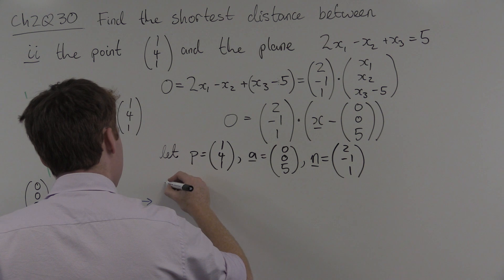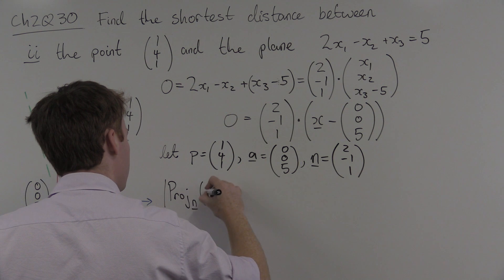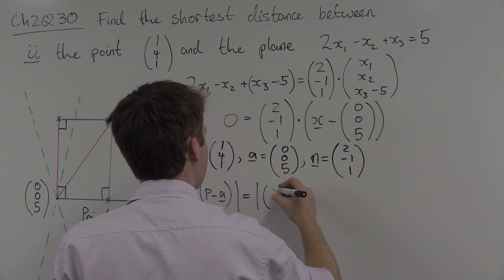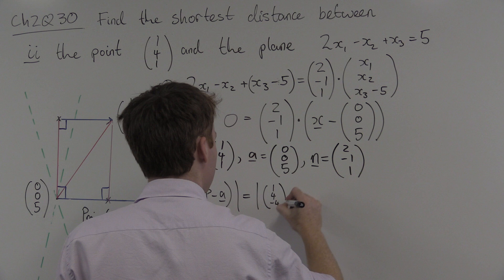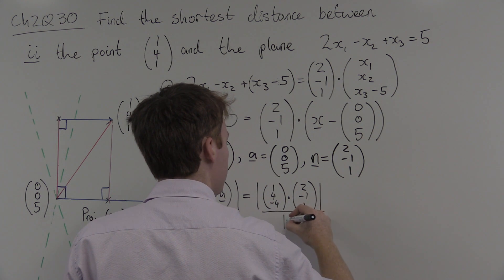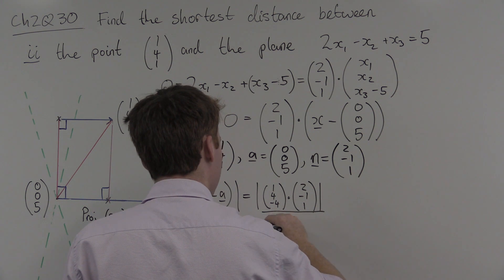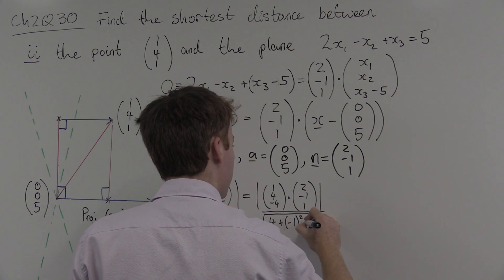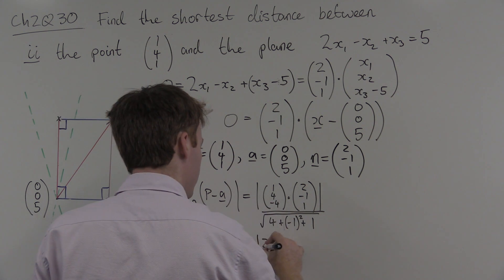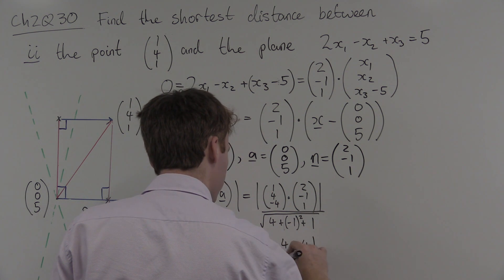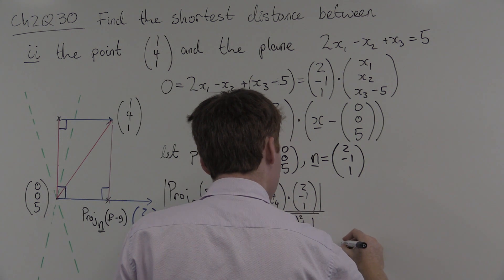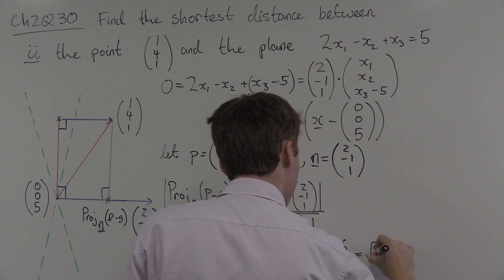And in this case, the length of the projection onto n of (p minus a) is equal to (1, 4, -4) dotted with (2, -1, 1) over the length of n, which is the square root of 4 + 1 + 1 = √6. That gives us 2 - 4 - 4 over √6, which is -6 over √6, which equals 6 over √6 = √6.